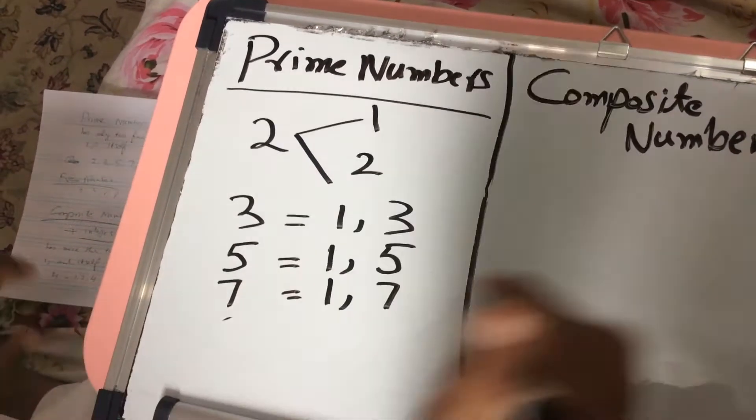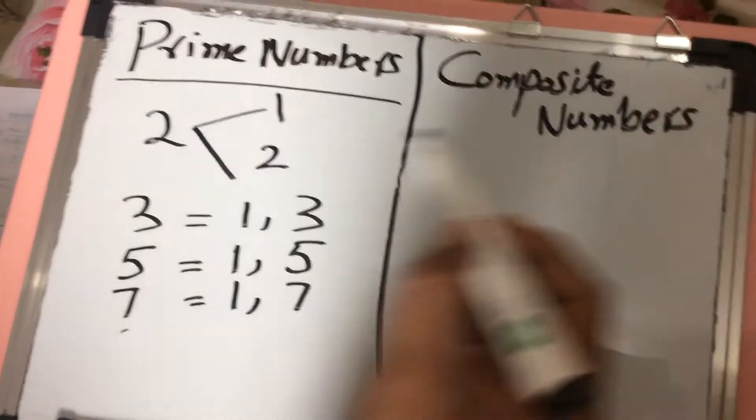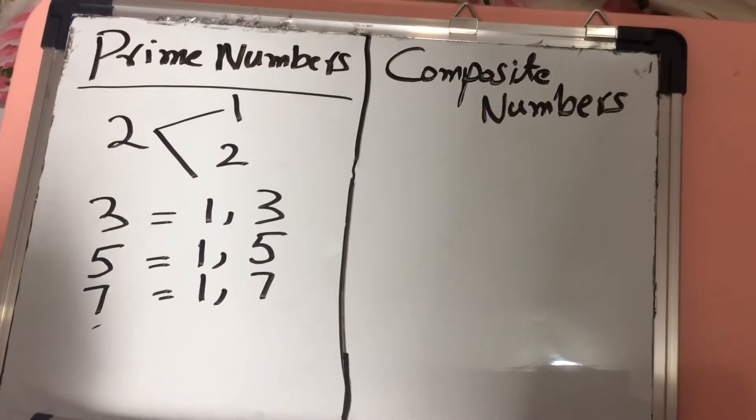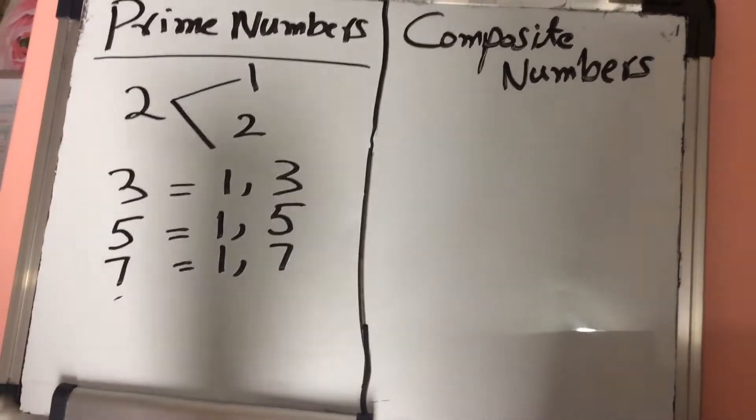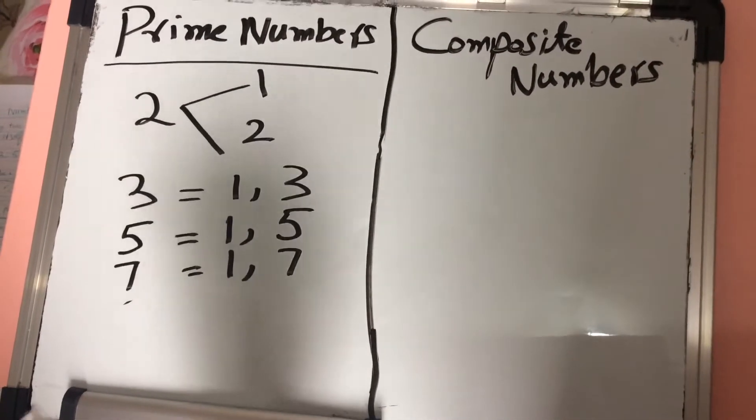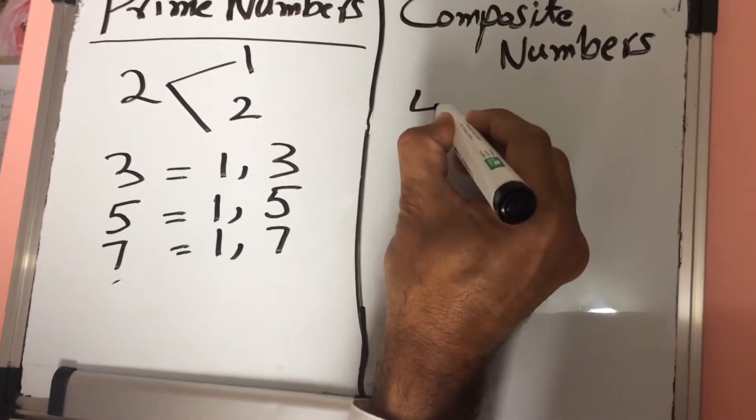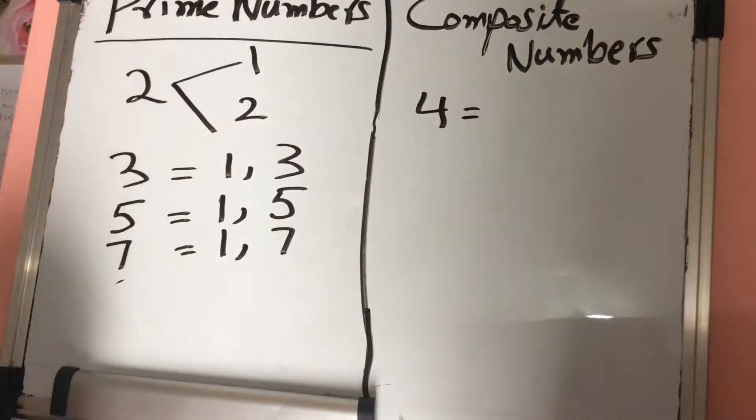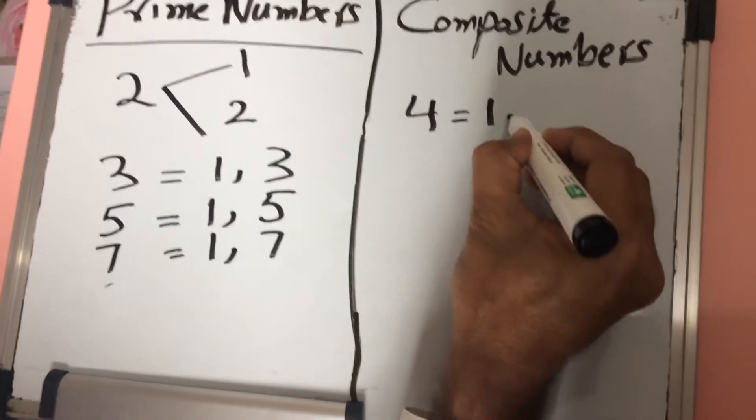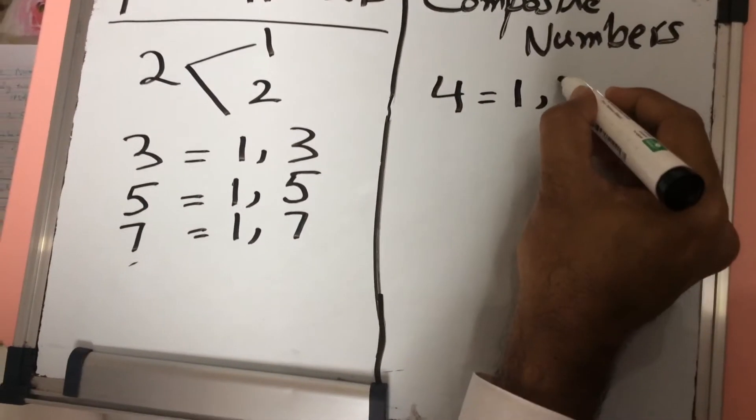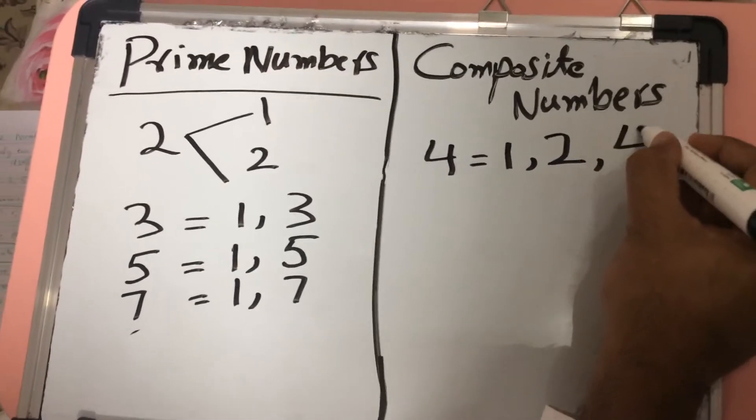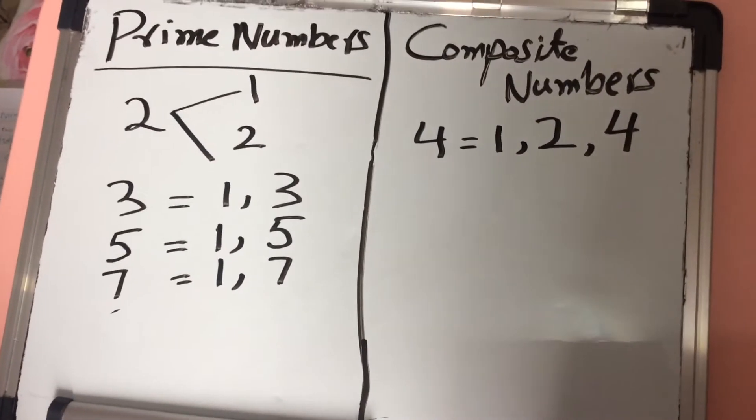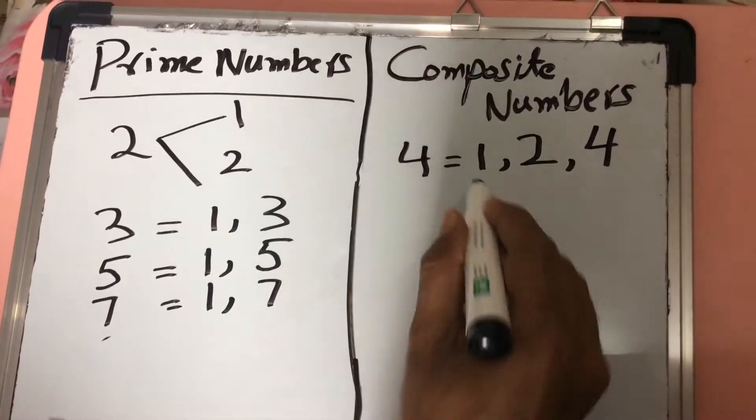Now we consider the composite numbers. They are all positive integers and are whole numbers. Fractions cannot be composite numbers. And they have more than 2 factors. For example, 4. How many factors does it have? 1, it can be divided by 2, and by 4. So it has 3 factors.